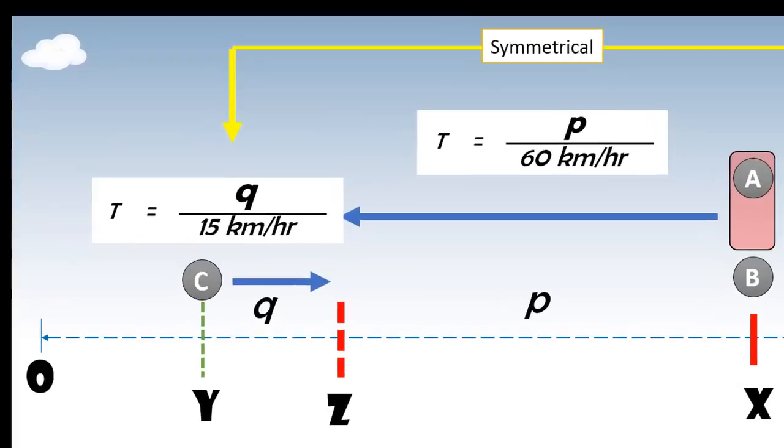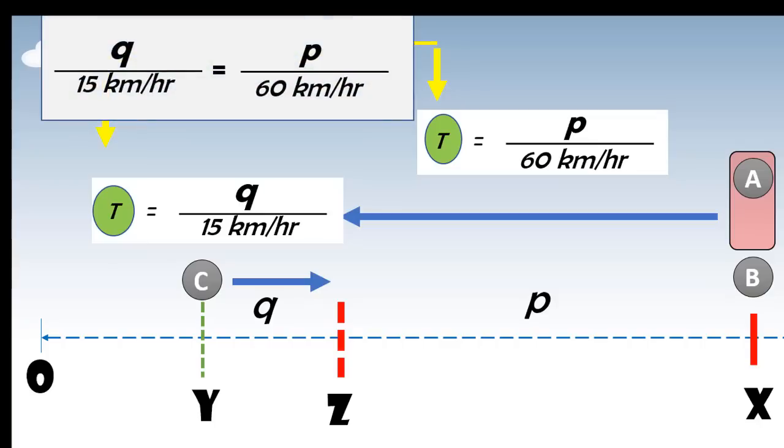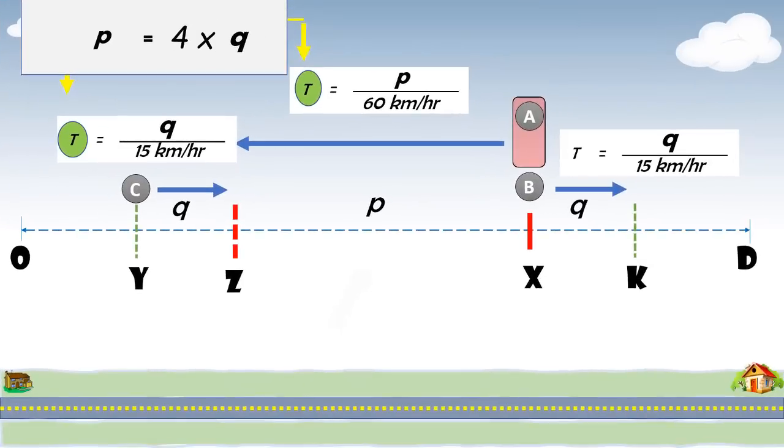Now, let's compare the equations of Karl and Alex. LHS is same in both equations. So, we can compare their RHS. So, P is equal to 4 times Q. Replace the value of P with 4Q.